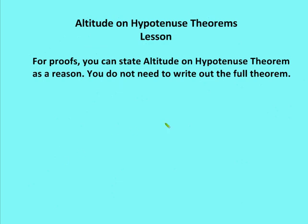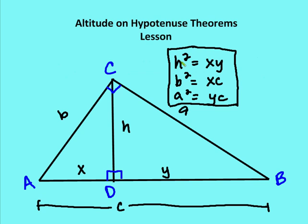For students, you can state 'altitude and hypotenuse theorem' as a reason without writing out the full theorem. In summary, with H as the altitude, X and Y as the left and right segments of the hypotenuse, and A and B as the legs: H squared equals XY, B squared equals X times C, and A squared equals Y times C. That's it for the altitude and hypotenuse theorems. We have a couple of practice problems to go through in the next edition of Auton Math.